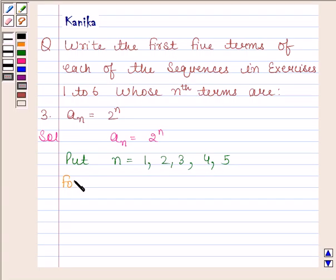For n = 1, a1 = 2^1 = 2. For n = 2, a2 = 2^2 = 4.